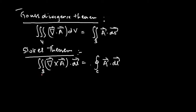In Stokes' theorem, the surface S considered need not be a closed surface — it will be an open surface. The surface integral of the curl of the vector field over this open surface equals the line integral of the vector field taken along the closed periphery or contour of the surface. So, given a line integral, you can convert it to a surface integral using Stokes' theorem.